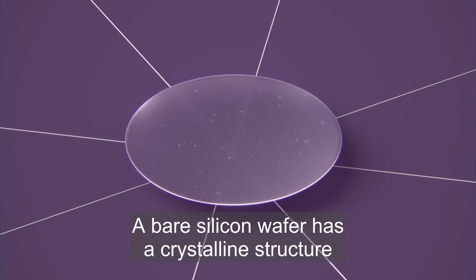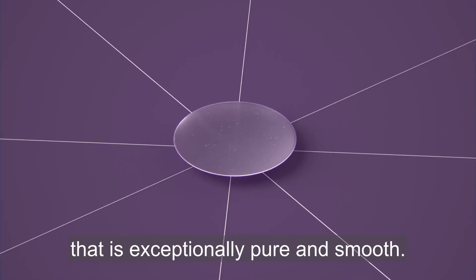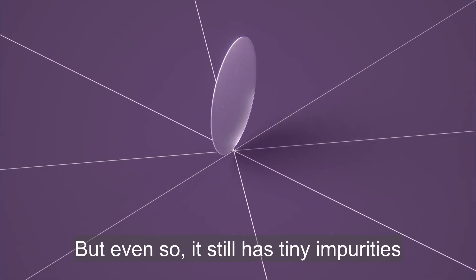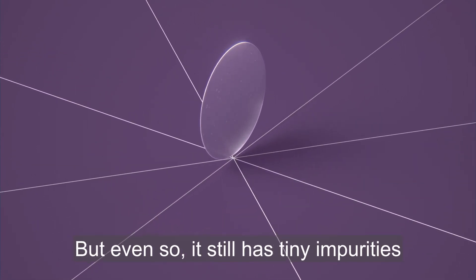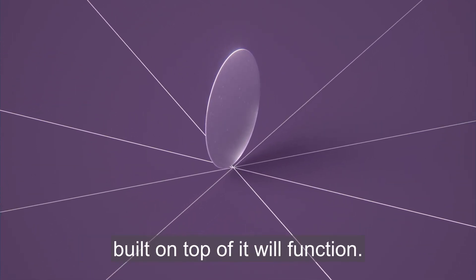A bare silicon wafer has a crystalline structure that is exceptionally pure and smooth, but even so, it still has tiny impurities that could affect how well the chips built on top of it will function.